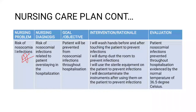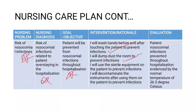The fifth problem that we can talk about is risk of nosocomial infection, which is related to prolonged hospitalization. Our goal or objective: patient will be prevented from nosocomial infections throughout hospitalization. In terms of interventions, you can wash hands before and after touching or attending to the patient to prevent infection. You can perform damp dusting within the room, use sterile instruments and equipment on the patient, and decontaminate instruments after use to prevent reinfection.